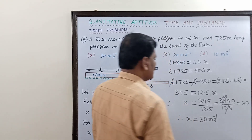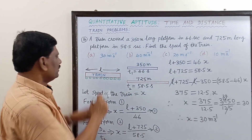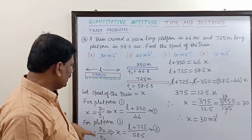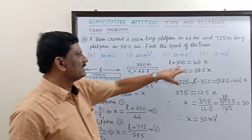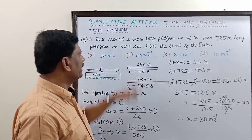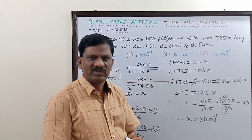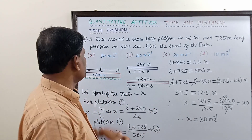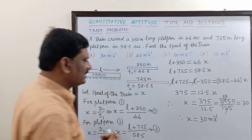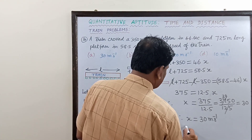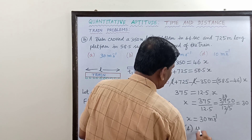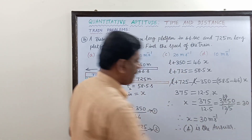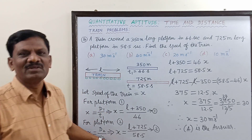The speed of the train is 30 meters per second. We could also find the length of the train L by substituting back into either equation, but the problem only asked for the speed. The answer is 30 meters per second, which corresponds to option A. Option A is the correct answer.